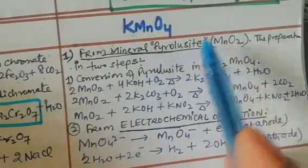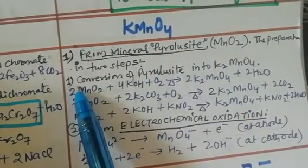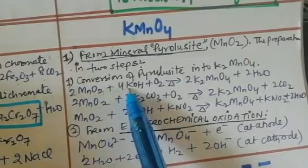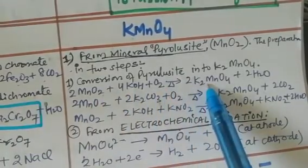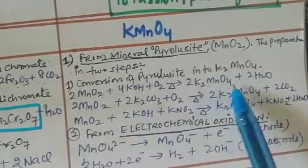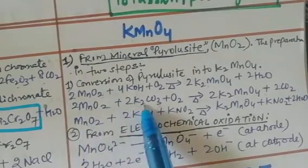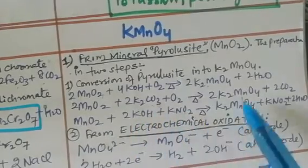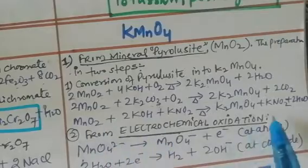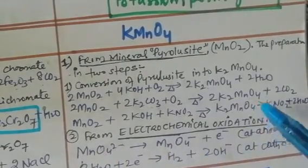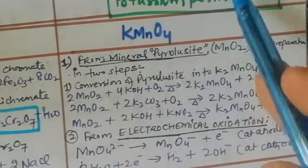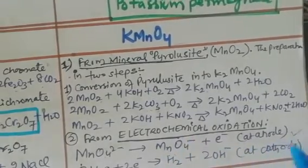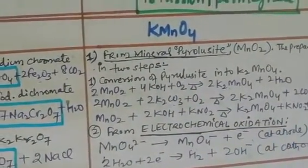Potassium permanganate is prepared from the mineral pyrolusite, which is manganese dioxide, in two steps. First, two manganese dioxide molecules react with KOH in the presence of oxygen to give K₂MnO₄. Then, K₂MnO₄ is converted — we can also use K₂CO₃ or KNO₃ — to give the manganate ion MnO₄²⁻. In the electrochemical process, MnO₄²⁻ (cathodic form) converts to KMnO₄, with MnO₄⁻ being the anodic form.